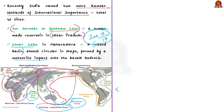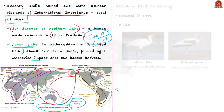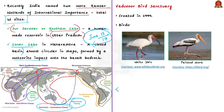With the addition of these two new sites, the total number of Ramsar sites from India has increased to 41. That was about the Ramsar sites and Point Kalamir Wildlife and Bird Sanctuary. Now let us see some facts about Vadavur Bird Sanctuary and Udaya Marthandam Bird Sanctuary.